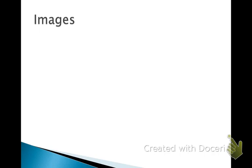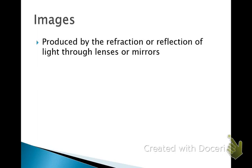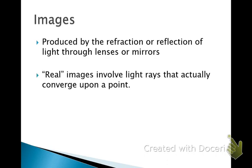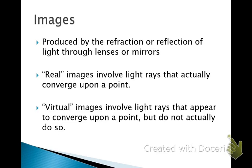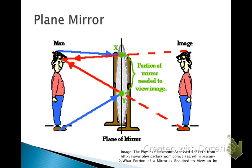And the last bit of this video will involve images, forming images through lenses and mirrors. So it's produced by either refraction of light or the reflection of light through a lens or a mirror. You can get real or virtual images. Real images are where the light rays actually converge where you see the image. Virtual images are where the light rays don't actually converge there. It's kind of a trick of the brain is how I like to think of it at least. And we'll talk virtual images in just a little bit.